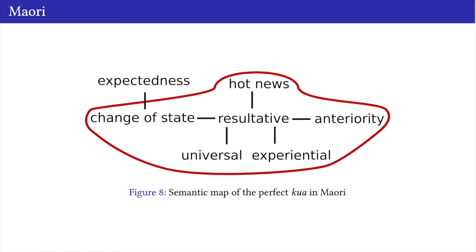The prediction of this paradigmatic and pragmatic blocking principle is that when we don't have a specific marker, perfect should cover the whole area compatible with its semantic definition. In Maori, we can see that perfect does cover the whole area—all the meanings seen so far plus the hot news meaning attested in English—because there is no specific marker for that reading.